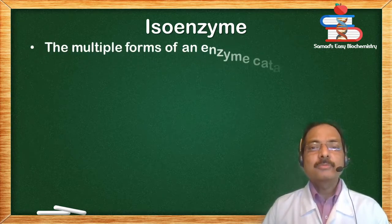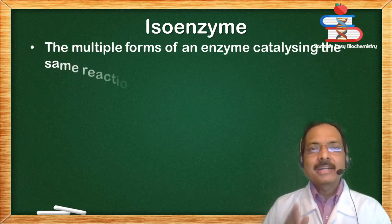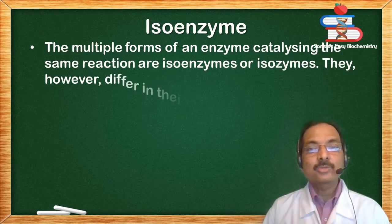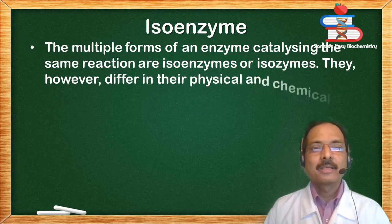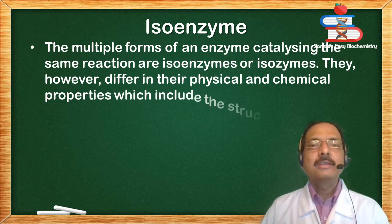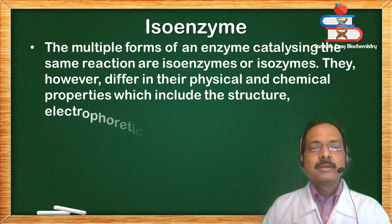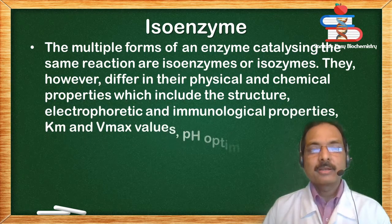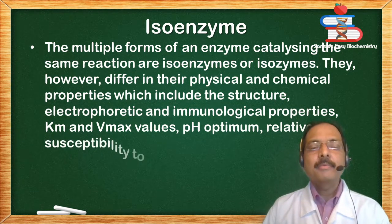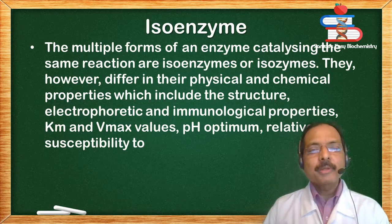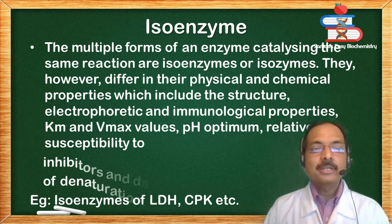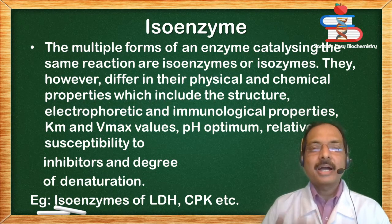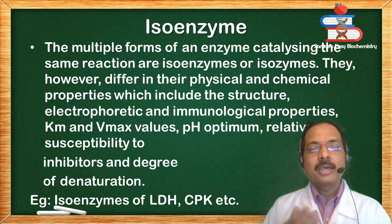Isoenzymes: the multiple forms of an enzyme catalyzing the same reaction are called isozymes or isoenzymes. They differ, however, in their physical and chemical properties, which include structure, electrophoretic and immunological properties, Km, Vmax values, optimum pH, and relative susceptibility to inhibitors and the degree of denaturation. Example: isoenzymes of CK and LDH.